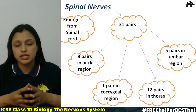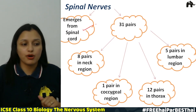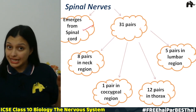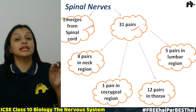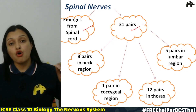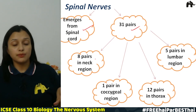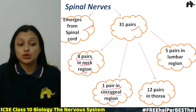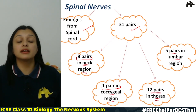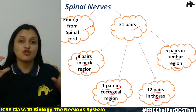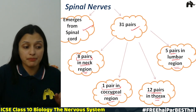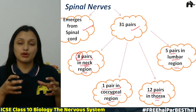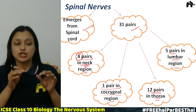Spinal nerves arise from the spinal cord, just as cranial nerves arise from the brain. There are 31 pairs of spinal nerves. Out of 31 pairs, 8 pairs are in the neck region, 12 pairs are in the thorax region, 5 pairs are in the lumbar region, and 1 pair is in the coccygeal region. You must remember these numbers and regions.